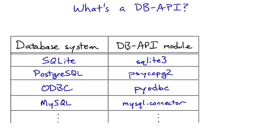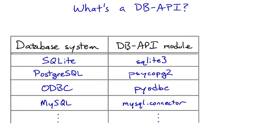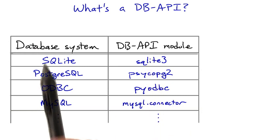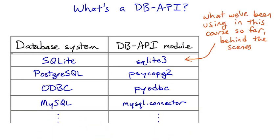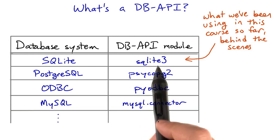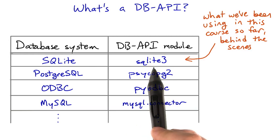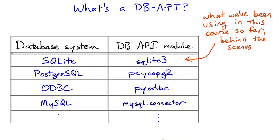Each database system has its own library. And as you can see, some of the library names are a little bit different from the names of the database systems that we work with. For exercises in the browser, we use the SQLite3 library.